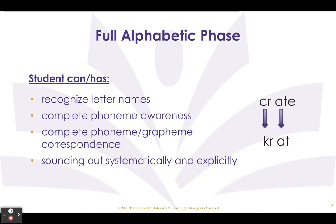A child in the full alphabetic phase has complete phoneme awareness and complete phoneme-grapheme correspondence. The child can segment spoken words fully into their phonemes or sounds. When spelling, the child can generate plausible spellings for unknown words; however, there may be some spelling errors. Because the child has complete phoneme-grapheme correspondence, the child can decode or read unfamiliar words.